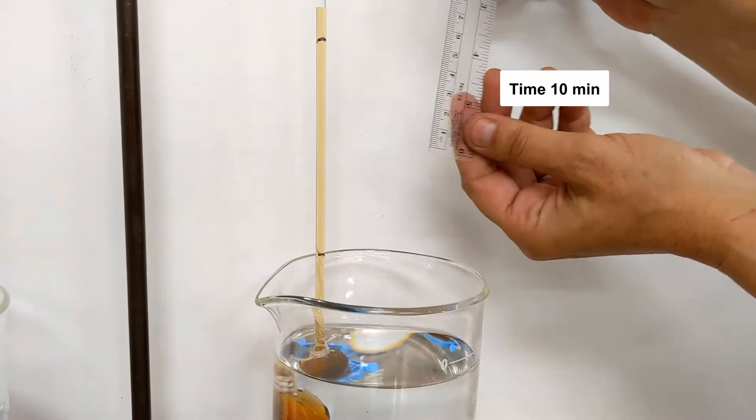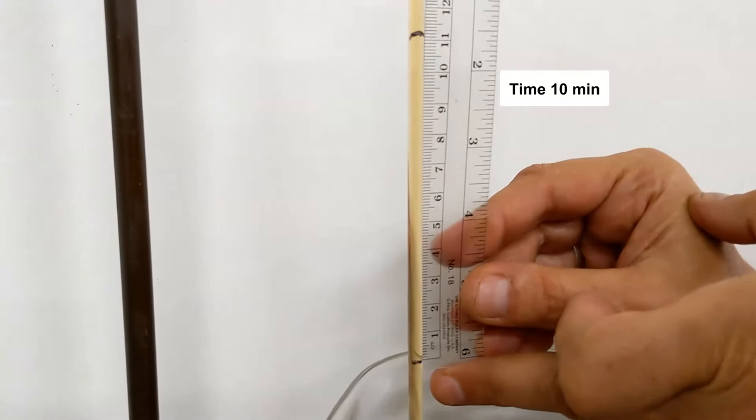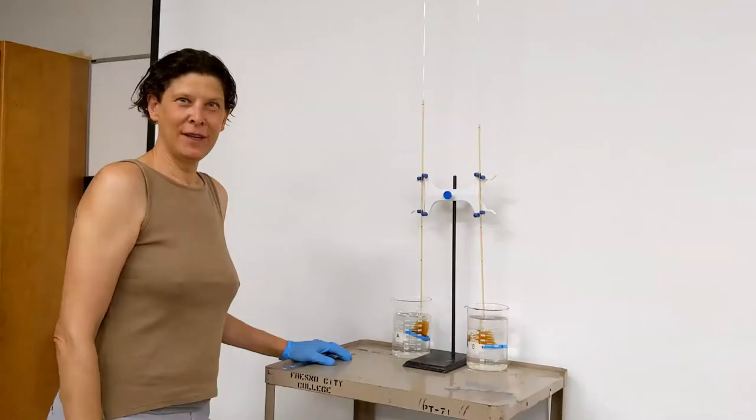For beaker B we'll do the same again. Metric system at zero for our initial and the top marking, that is 11.1 centimeters.